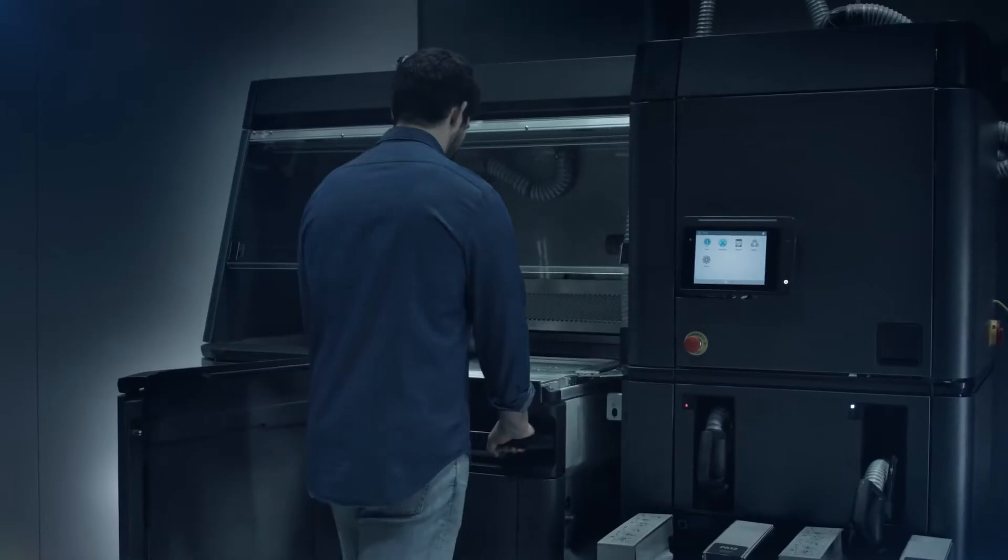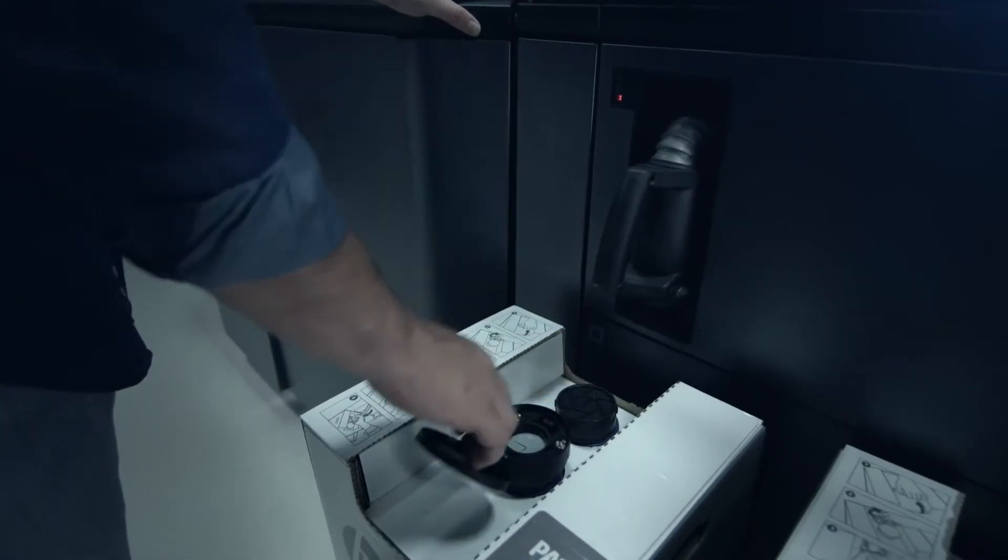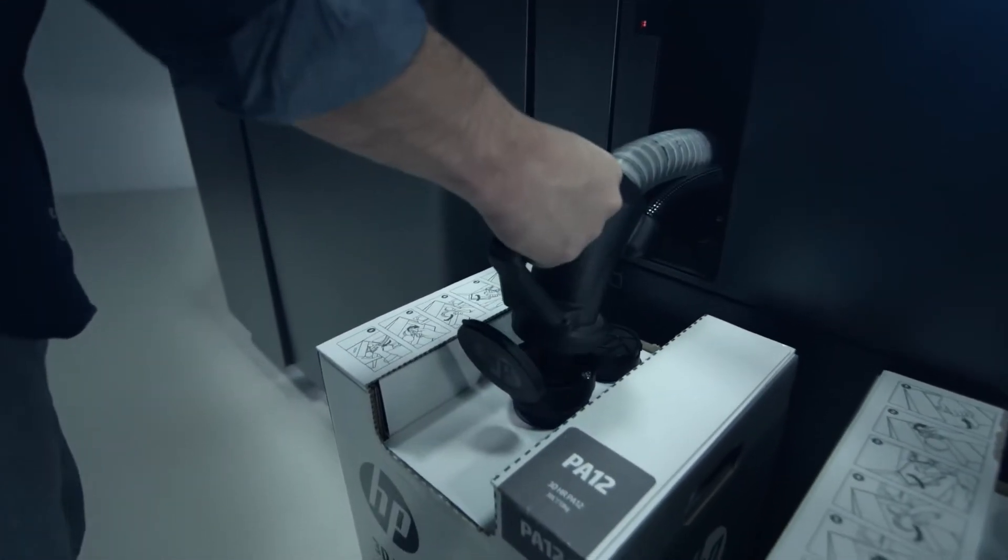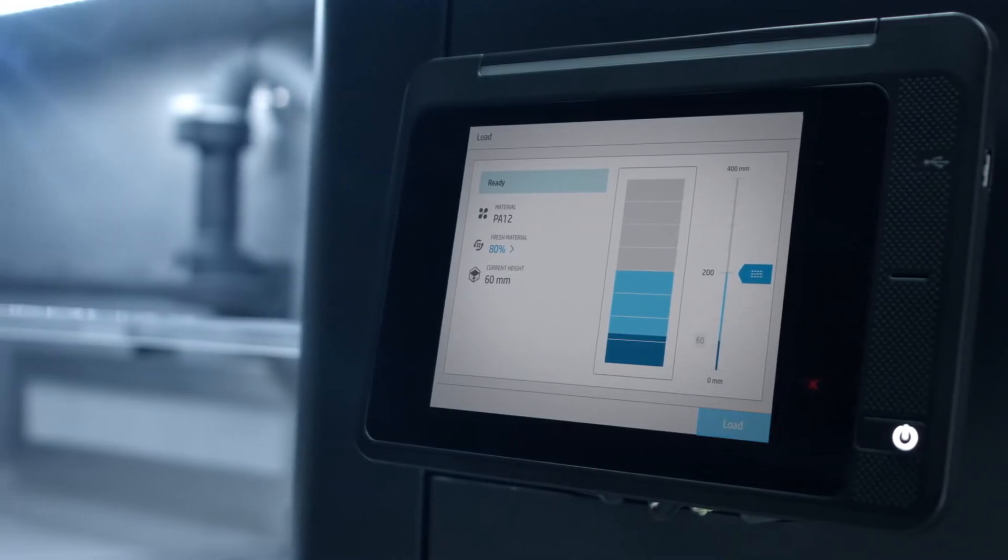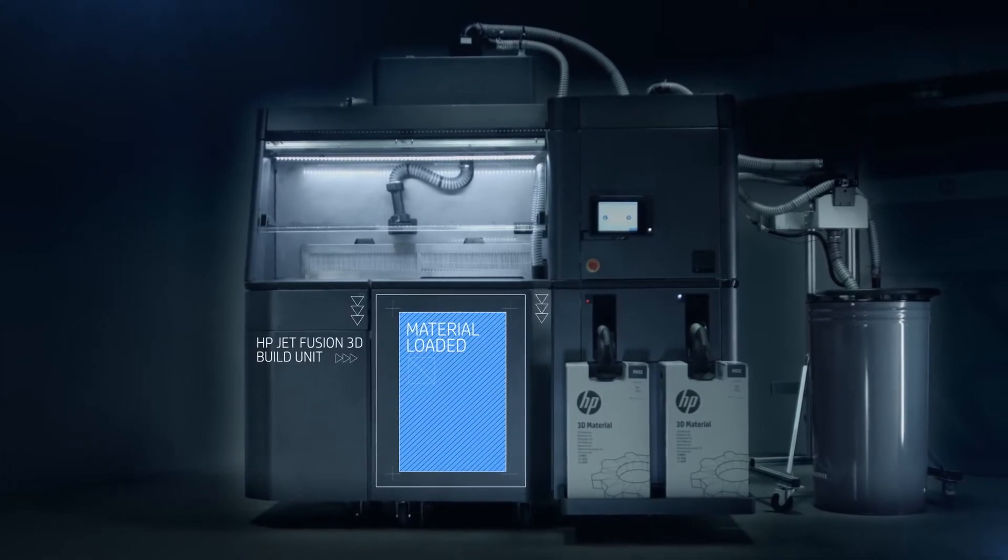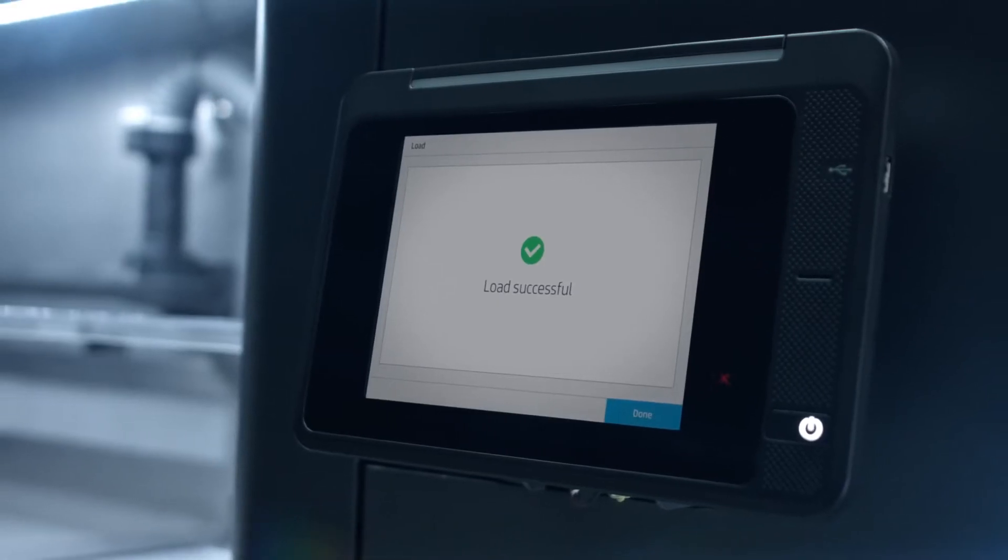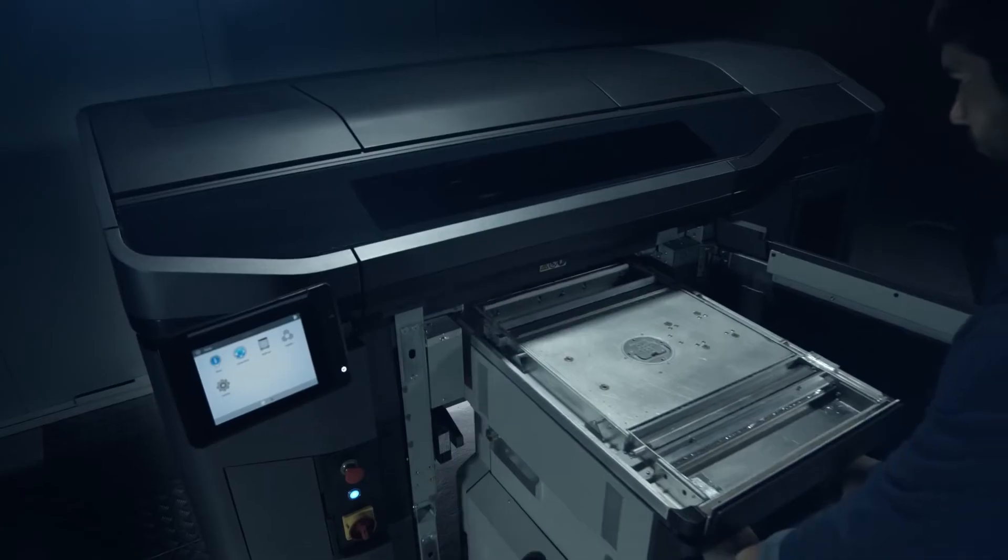For materials loading, the build unit is inserted into the HP JetFusion 3D processing station. Pre-packed HP materials cartridges are installed and quantity and mixing options selected. The materials transfer to the build unit in a clean and automated process before it is slotted into the printer so production can start.